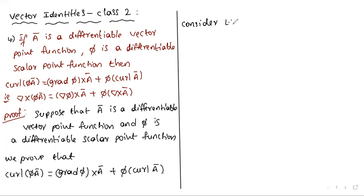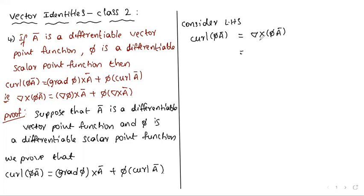Consider the left-hand side: curl(πĀ). This can be written as del cross (πĀ). Expanding: i-bar cross ∂(πĀ)/∂x plus j-bar cross ∂(πĀ)/∂y plus k-bar cross ∂(πĀ)/∂z.